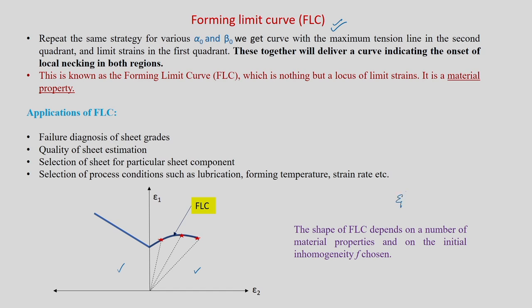We introduced epsilon 1 star and epsilon 2 star in the previous section. If we get this data for different values of alpha or beta — from the left extreme of negative minor strain to the right extreme of positive minor strain — and then connect all of them, that is nothing but the forming limit curve.